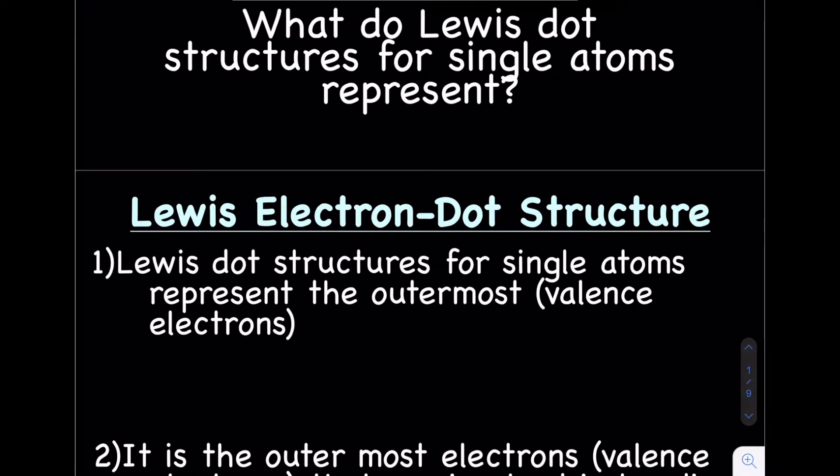Lewis electron dot structures—that's the full name. People usually don't use the full name but some variation like Lewis dot structures, electron dot structures, Lewis dot, electron dot, or pretty much any mix and match of there. Anyway, Lewis dot structures for single atoms represent the outermost or valence electrons.